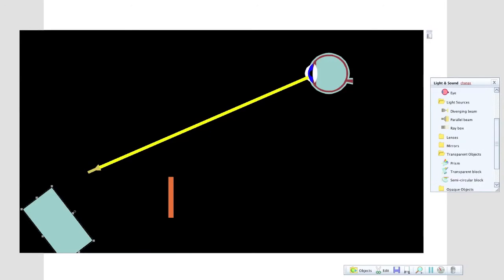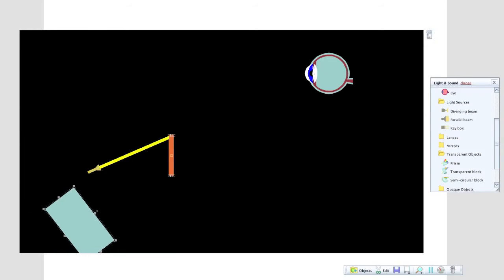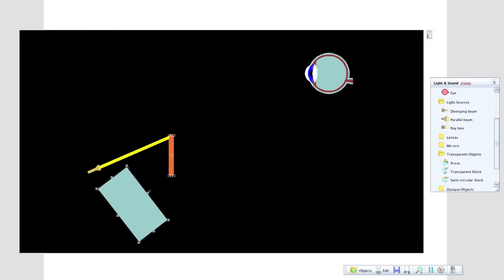Which brings us back to our penny trick. Remember how the water made the penny magically appear? Here we can see an eyeball that can see the light from a penny. But we will block the light with the edge of a cup. So the person can't see the penny inside the cup. But what can we do to make the penny appear?